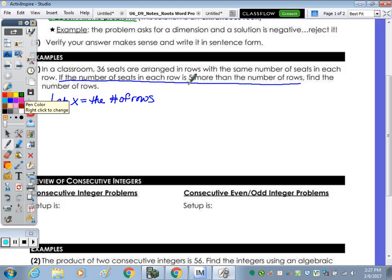Then, the number of seats is five more than the number of rows. Algebraically, what would be that let statement for the number of seats? It's not going to be five plus X, more than means to add. So it's going to be either five plus X or X plus five. Addition is commutative. I like to write it in terms of X first. So X plus five is the number of seats.